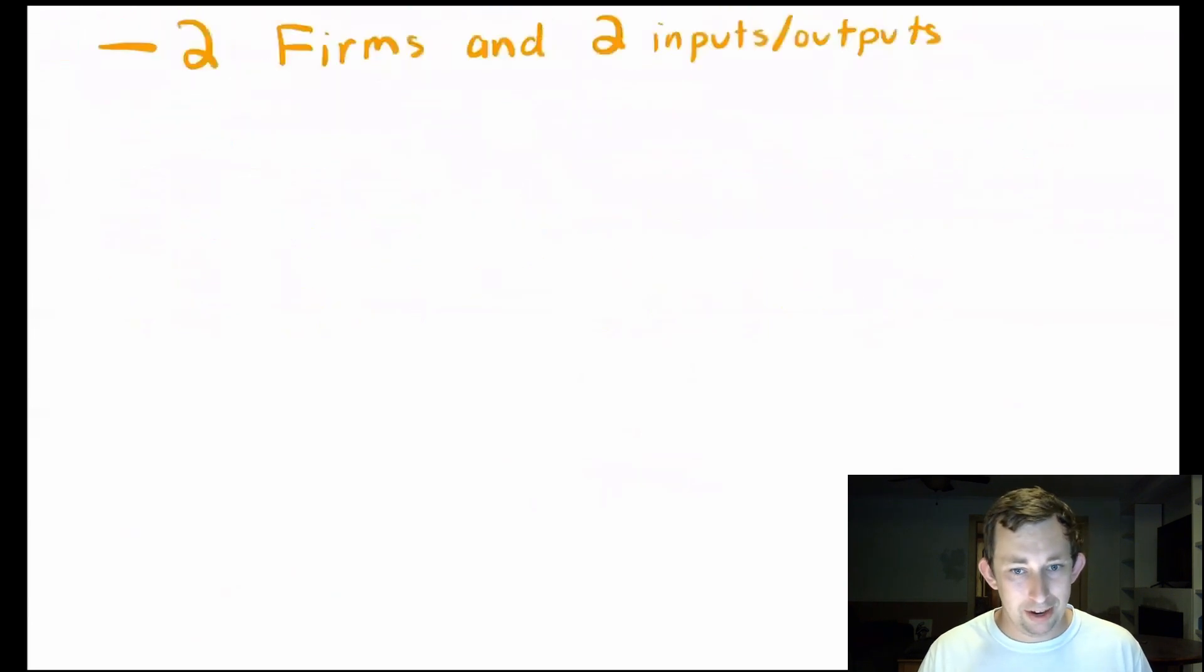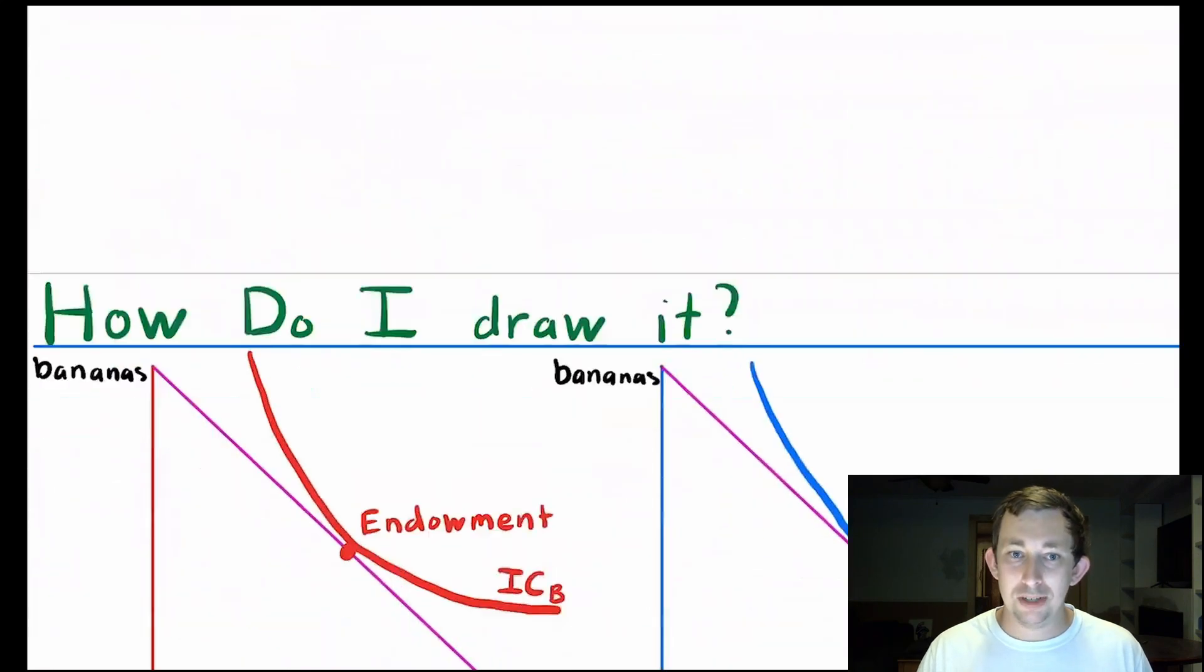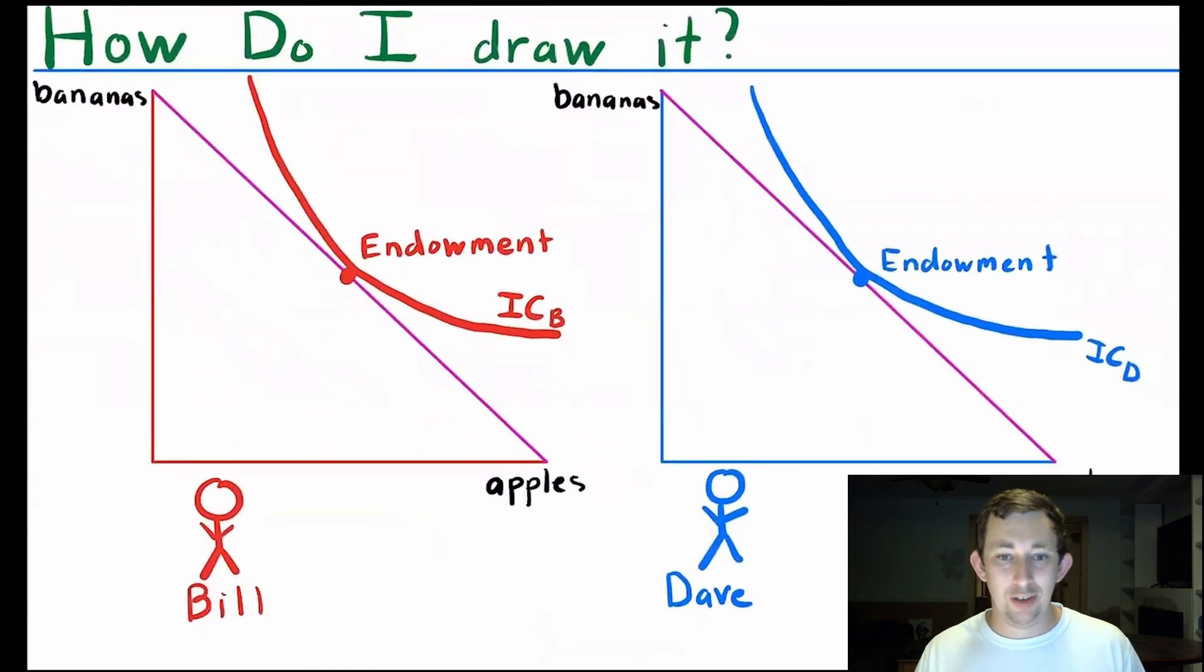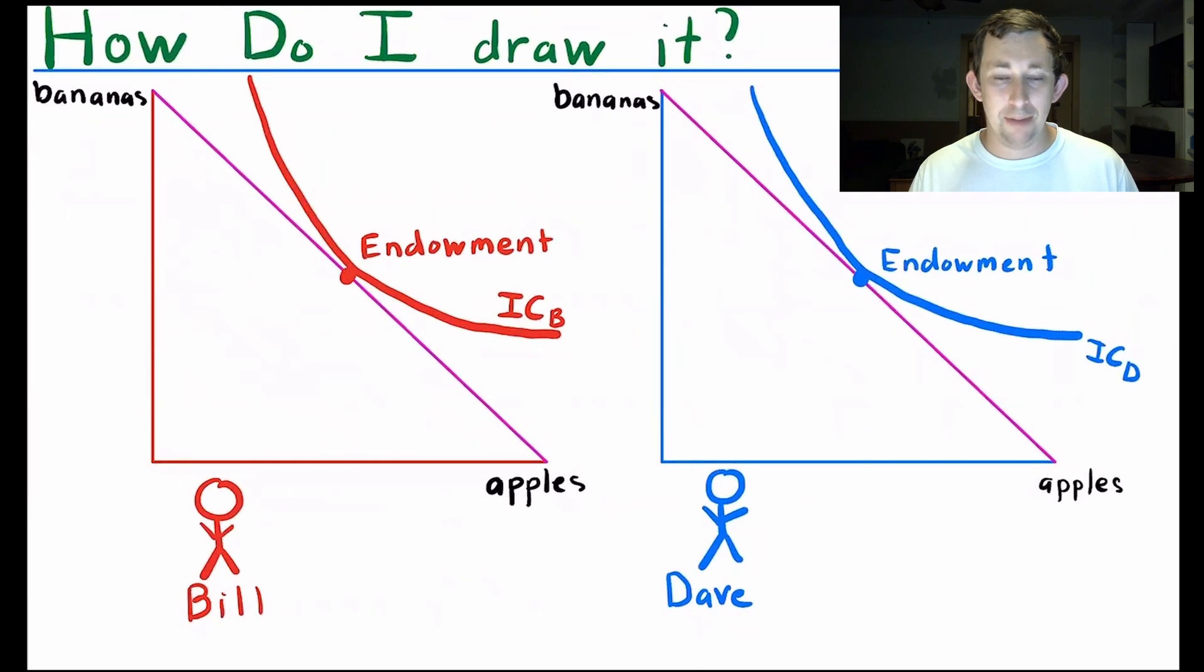Now let's talk about how to draw it. We've got two people, Bill and Dave. They both got an endowment or a backpack full of some bananas and apples. They've got some prices that are derived from the market. They don't get to choose those. That's that purple line that you see.